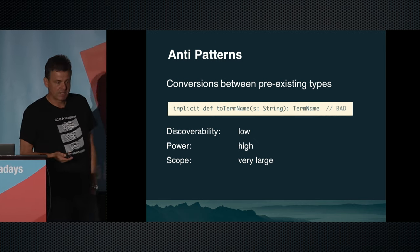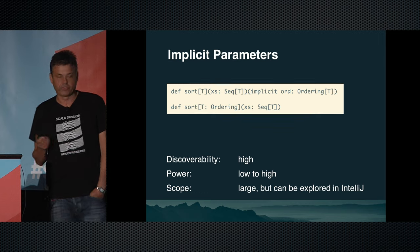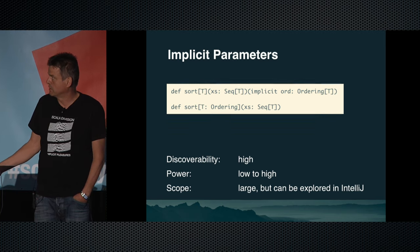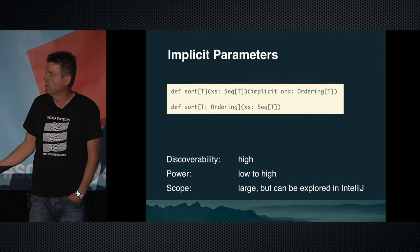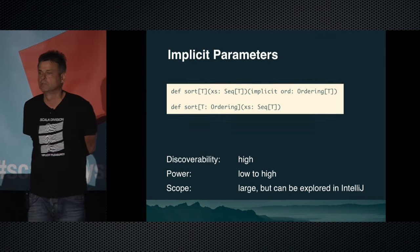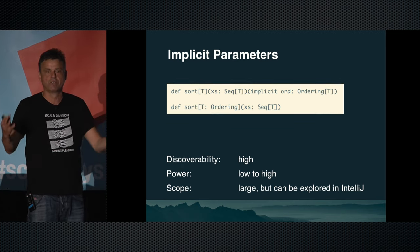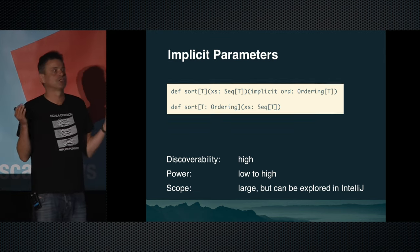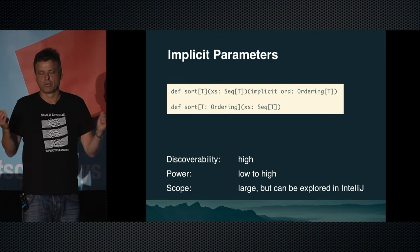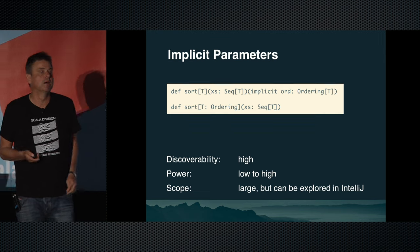Now, what about implicit parameters? Here's an example we all know: a sort function that takes an 'Ordering' as an implicit parameter. Or there's a convenient shorthand — a context bound: write 'T: Ordering', which means the same thing. Discoverability is quite high because you know sort takes a parameter but don't see it explicitly given in the source. The power can be high or low depending on what you do — with recursive implicits you can synthesize a very large amount of interesting code. The scope is large but IntelliJ can help you find what implicit parameter is being passed.